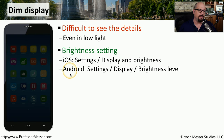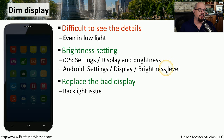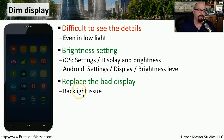In Android, you commonly find it under Settings, Display, and Brightness Level. If changing those brightness levels doesn't work, then you might have a problem with the display itself, and you would have to replace that entire display. Most likely, the issue is related to the backlight that is behind the display that shines through and allows you to see everything on that LCD display.